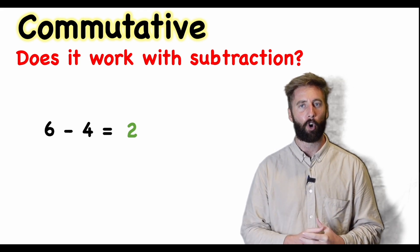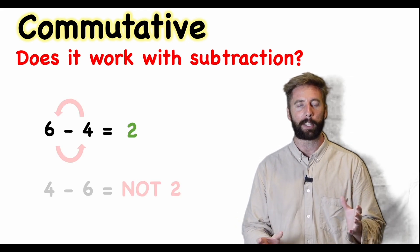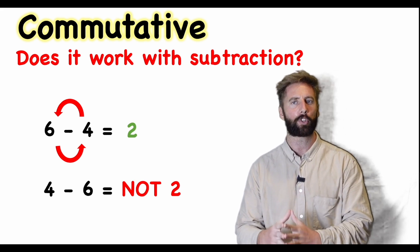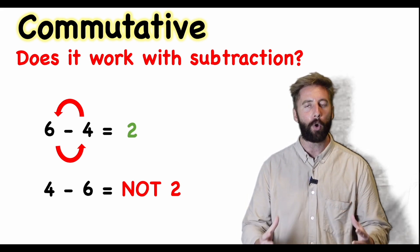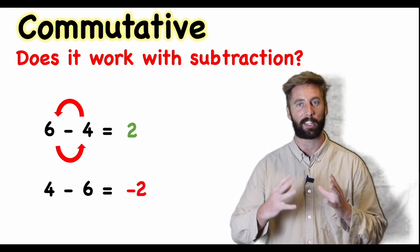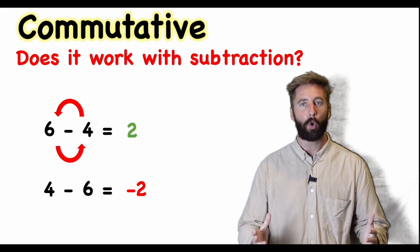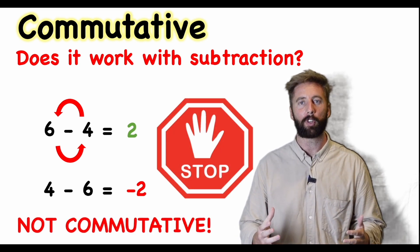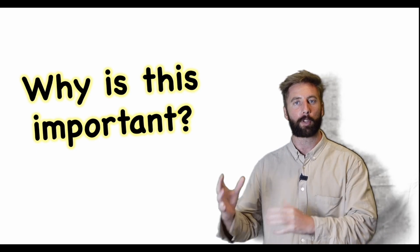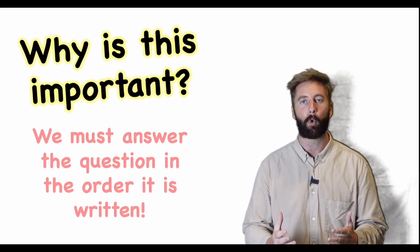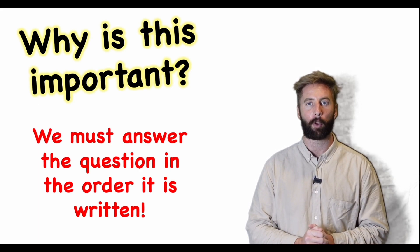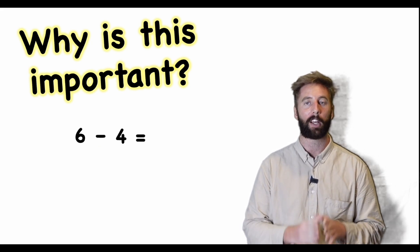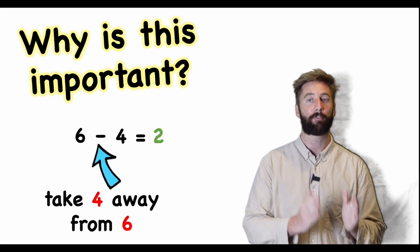However, let's look at six minus four — we get two. But now let's commute the numbers: four subtract six. Do I also get two? No, I get a totally different answer. In this case I actually get into the negatives — I have minus two. So subtraction is not commutative. This is really important: we cannot move our question around. We have to do it in the order it's asking us.